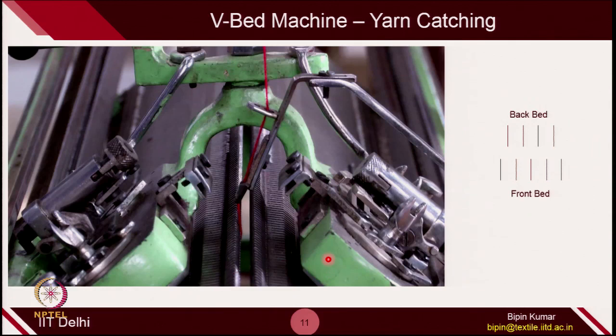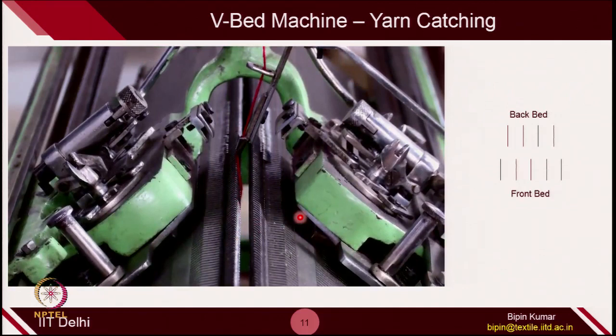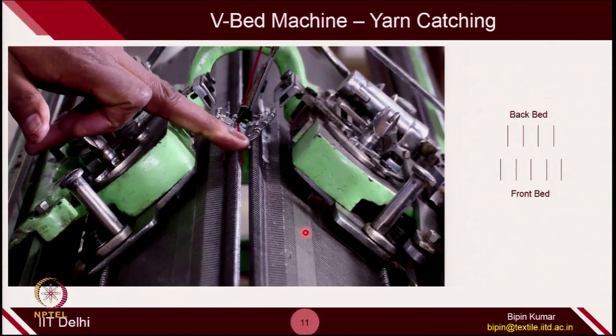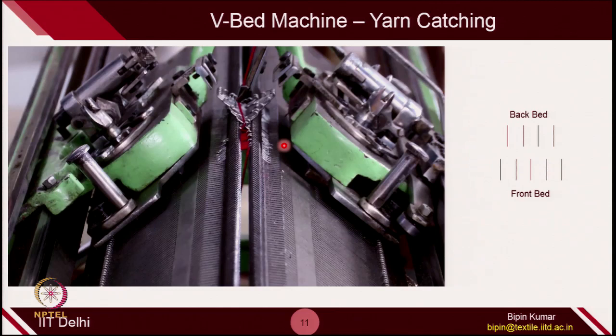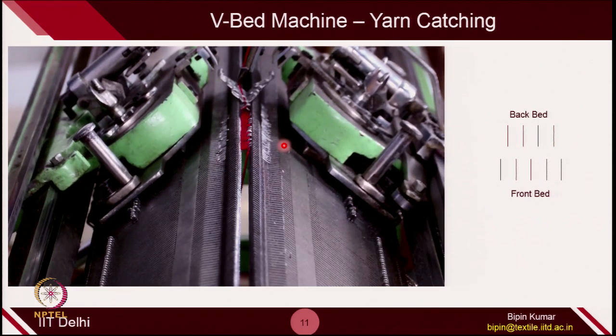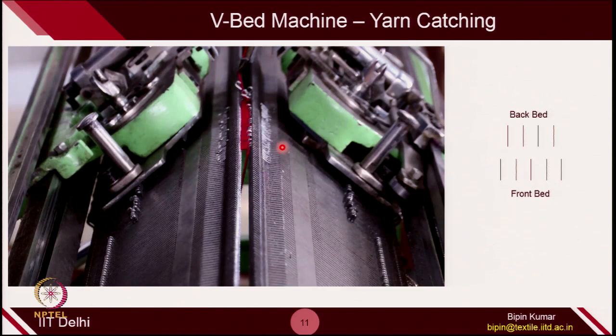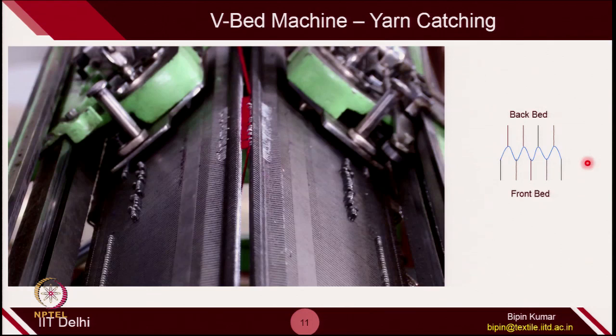How does it catch the yarn? We are providing the yarn through a feeder — the feeder is actually in the center. You can see how both the beds are catching the yarn. The needles start catching the yarn and they create loops. The yarn is being supplied from left to right. Yarn is first supplied to the front bed needle, and then the back bed needle is catching the yarn. Then again the front bed catches the yarn and then again the back bed needle catches the yarn. So the yarn is being supplied from front to back and then back to front in sequence.